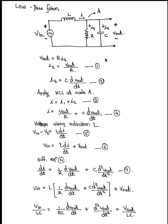We will consider the transfer function, impulse function, and the location of poles and zeros on the s-plane. For the transfer function, we can use KCL at node A. We also have the voltage difference along the inductor, which is nothing but the voltage difference between input voltage and output voltage. From the circuit we get this equation.